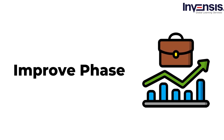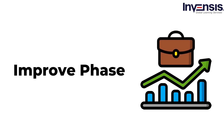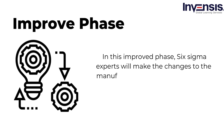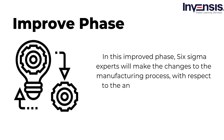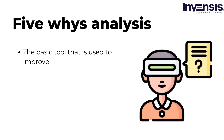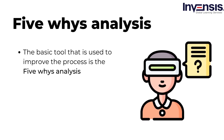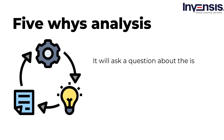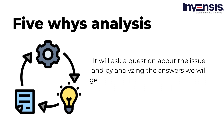We will now start with the improve phase. In this improve phase, Six Sigma experts will make changes to the manufacturing process with respect to the analyzed results and ensure that the defects are addressed. The basic tool used to improve the process is 5Y analysis. This is the crucial analysis to reach the right cause of the problem, which helps the team find the correct solution. It asks a question about the issue, and by analyzing the answers, we get accurate information to act on and resolve the issue.